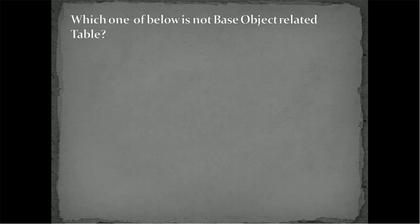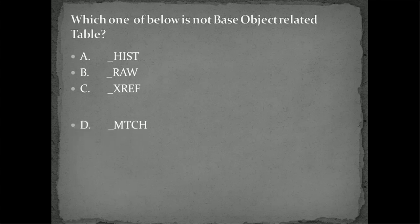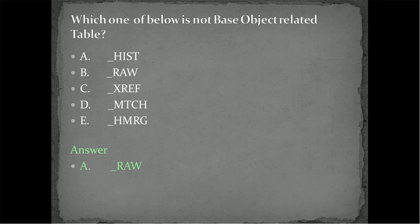Which one of the below are not base object related table or is not base object related table? So there will be list of the tables which we have to find out which one is not related to the base object. underscore HIST, underscore RAW, underscore XREF, underscore MTCH. So these are the tables we have. And the answer, I think you got the right answer. The answer is underscore RAW. The underscore RAW table created for the staging table. The rest of the listed tables are associated with base object.